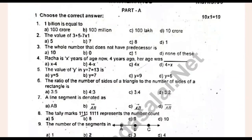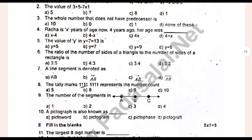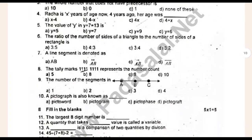1 billion is equal to dash. The value of 3 plus 5 plus 5 minus 7. The whole number that does not have a process rate is dash. Radha is X years of age now. 4 years ago, her age was dash. The value of y in y plus 7 equals 13 is dash. The ratio of the number of sides of a triangle to the number of sides of a triangle is dash. The line segment is inodalus dash.